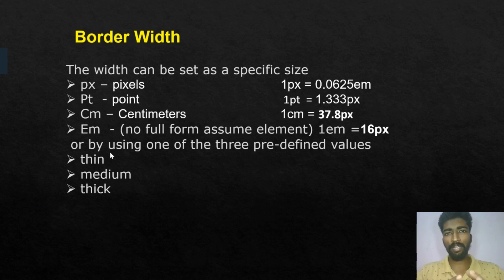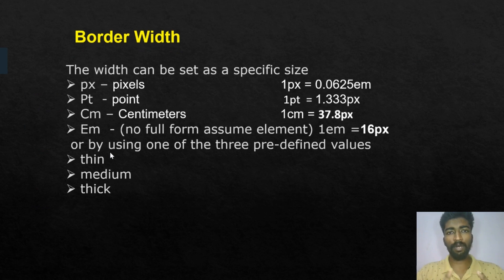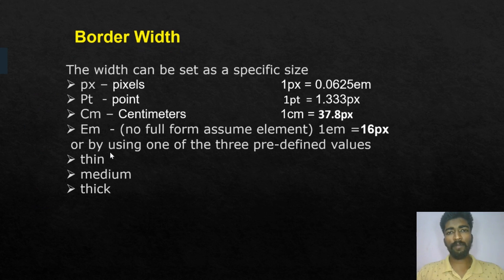Em is the element — you can assume it is the full form, the element. 1pt is the point — the point is 1.333 pixels. We basically know that cm is 37.8 pixels.